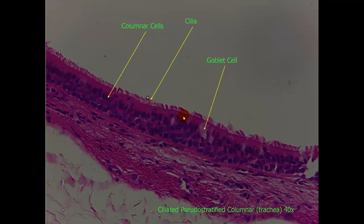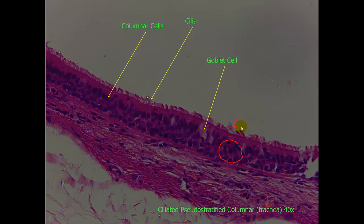Here is ciliated pseudostratified columnar. This is in the trachea at a 40x magnification. On the last slide you could see that nice delineation between the two layers of cells, and the nuclei were spread apart. Here, notice that all these nuclei seem to be jammed together within these columnar cells — that's going to help identify it as pseudostratified. It's not the only indication, but it does help. On the apical side, we can see the cilia, those tiny hair-like projections used to produce movement. We can also see the goblet cells, which appear as spaces.